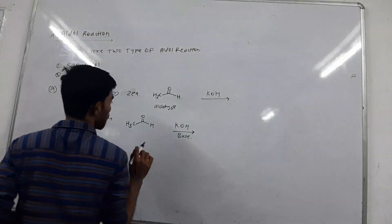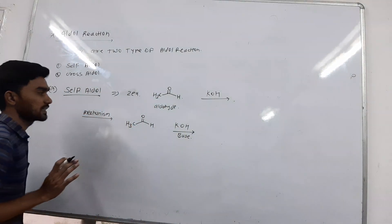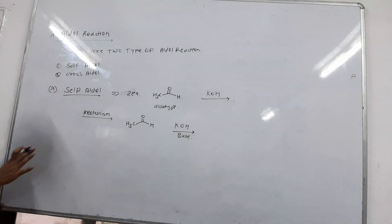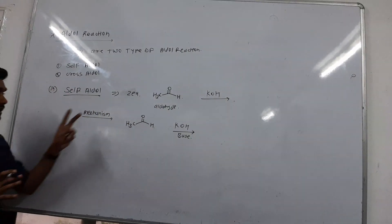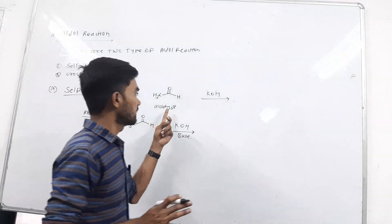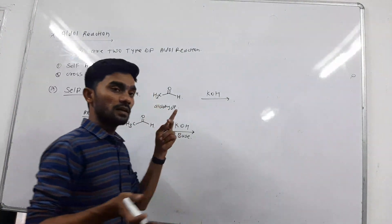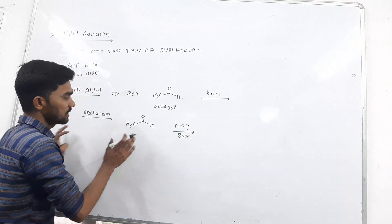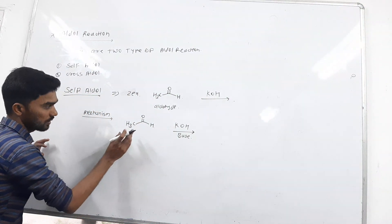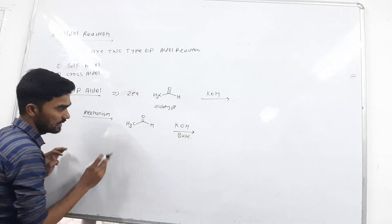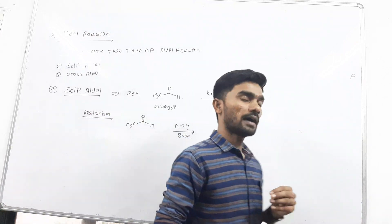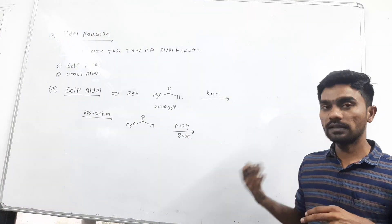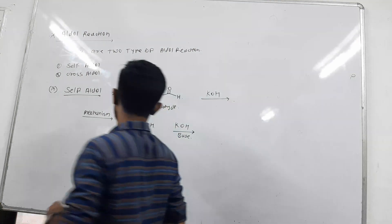Base is most required for aldehyde reactions. In the self-aldol reaction, two equivalents of one aldehyde molecule are required. One aldehyde molecule becomes enolized and then attacks another aldehyde — the same aldehyde.